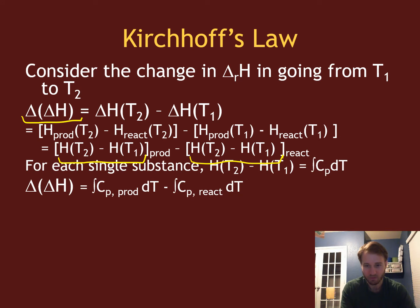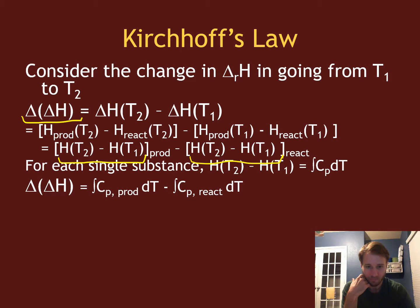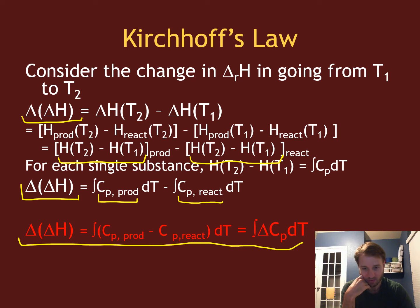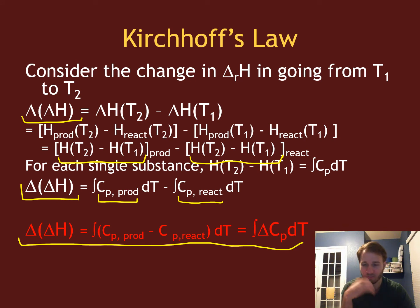So for each of these, if I recall from earlier, H(T2) minus H(T1) is just the integral of Cp dT. And so this delta delta H is just equal to the integral of the Cp of the products minus the integral of the Cp of the reactants. This delta delta H is given by the integral of the Cp of products minus reactants dT. Often that is shorthand written as delta Cp — so delta Cp is the Cp of the products minus the Cp of the reactants — and this is Kirchhoff's law.